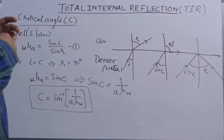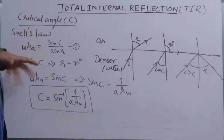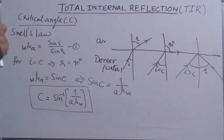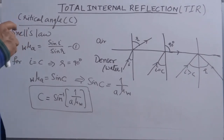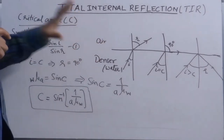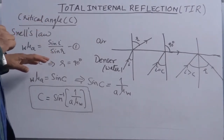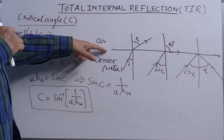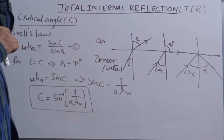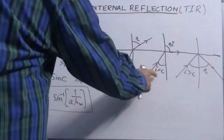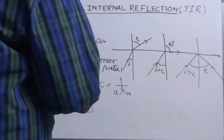So what is total internal reflection as a whole? It is a phenomenon of reflection of light in a denser medium from an interface of rarer and denser medium, when the angle of incidence becomes greater than the critical angle.